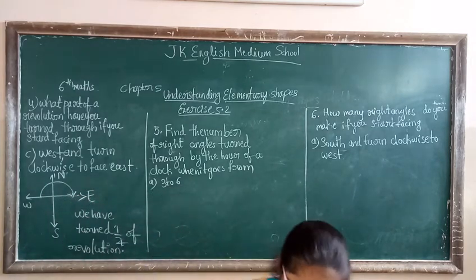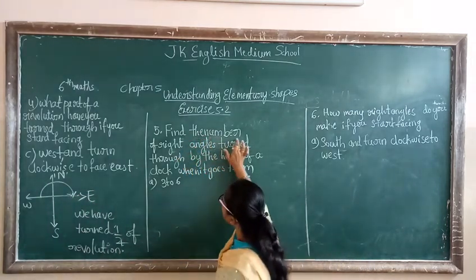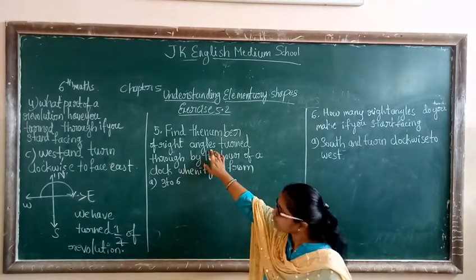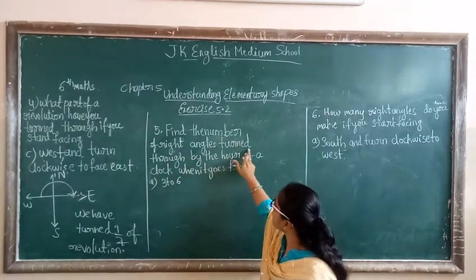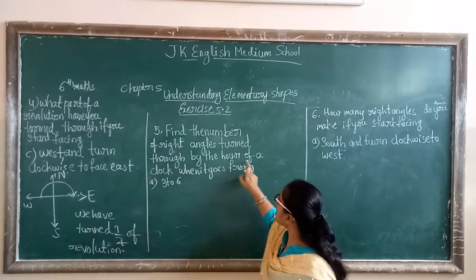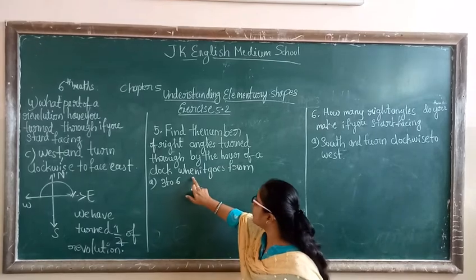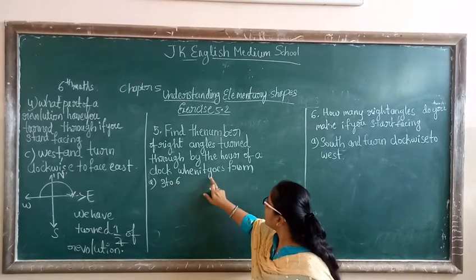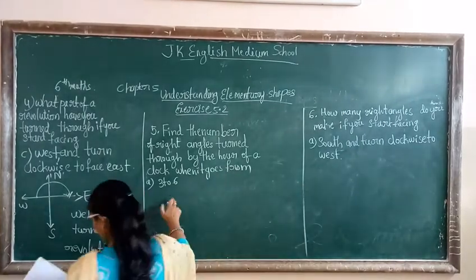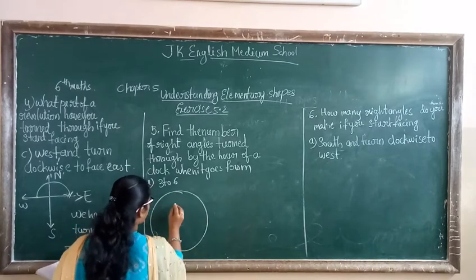Let me call the fifth question. That is: find the number of right angles turned through by the hour hand of a clock when it goes from three to six. So let's draw a clock here.